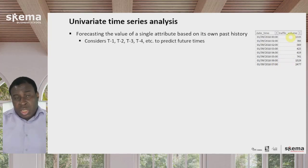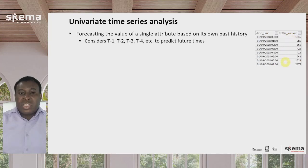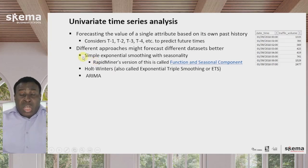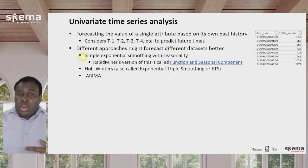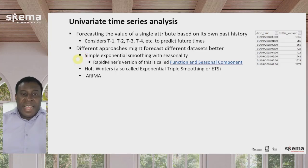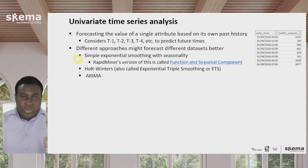It tries to detect a trend, perhaps to detect seasonality, and based on that, predicts future traffic volumes. There are different approaches that can be used for univariate time series analysis, and some approaches work better on some data sets than others — there's no one approach universally better in all cases. Some very good approaches that work well on many data sets include simple exponential smoothing with seasonality, which is the classic approach and still works fairly well.